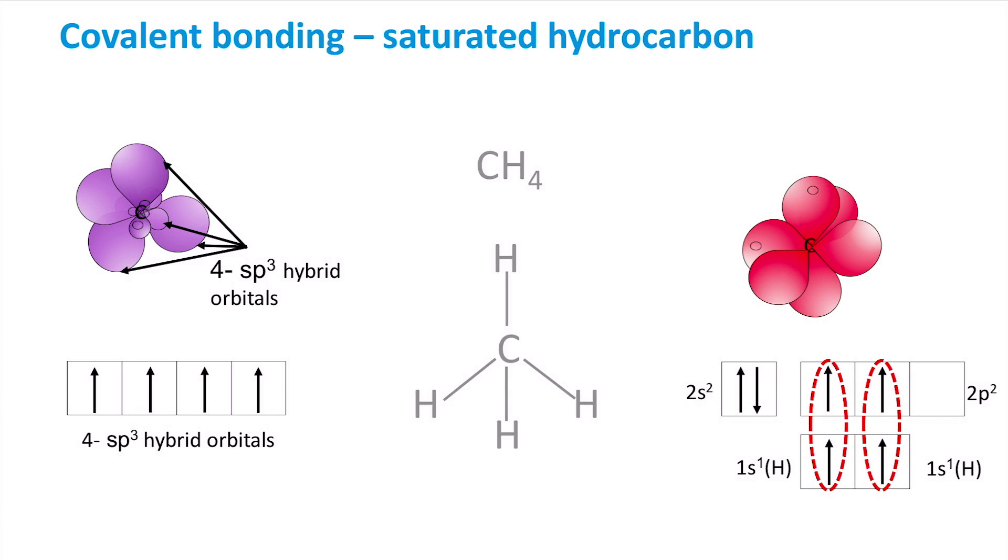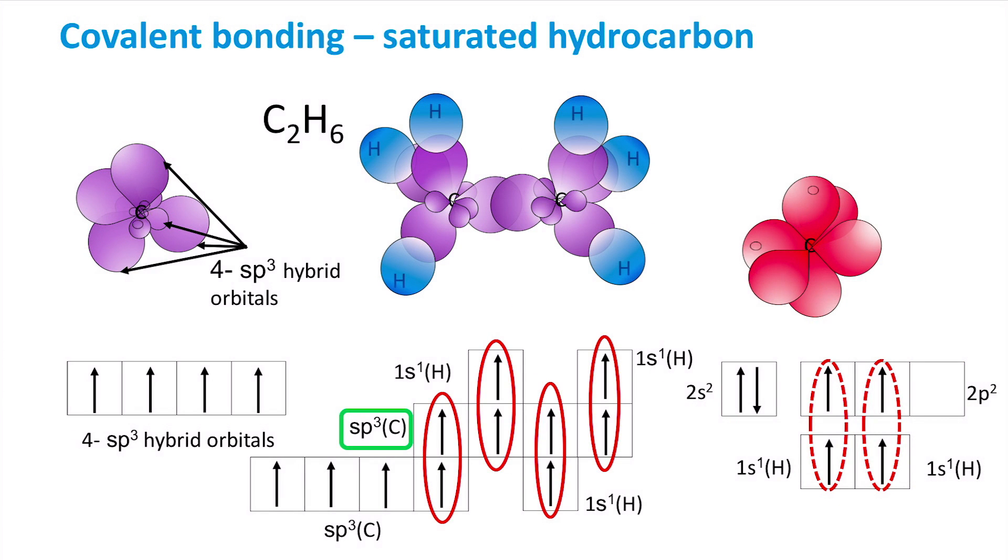Similarly, ethane, with a molecular formula of C2H6, has 2 carbon atoms bonded to each other and 2 hydrogen atoms each. These covalent bonds are called sigma bonds and are formed by the direct overlap of two orbitals.